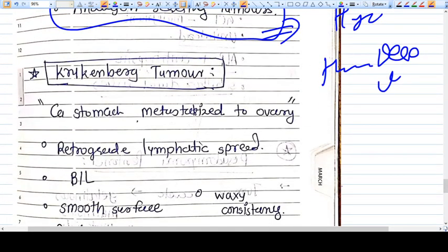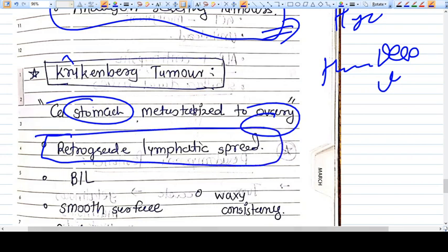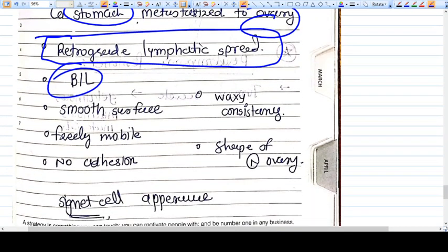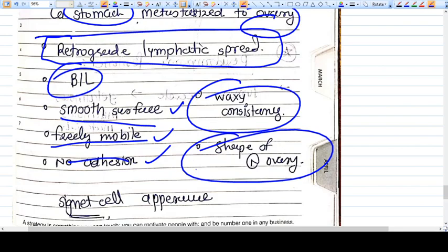Now comes Krukenberg tumor. Is it a tumor of the ovary? No, it's actually a metastasis from another organ—the stomach—metastasized to the ovary via retrograde lymphatic spread. They're always bilateral and very unique because they have smooth surface despite being metastasis. They're freely mobile despite being metastatic tumors with no adhesion. If you find metastatic tumors you expect irregularities, adhesions, and immobility, but here everything is different: freely mobile, no adhesion, smooth surface, waxy consistency, and they maintain the shape of normal ovary. Signet cell appearance is seen on histopathological examination.